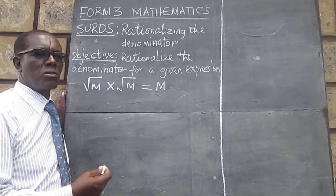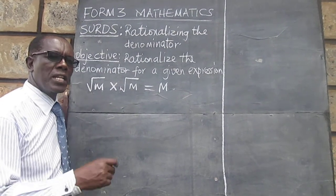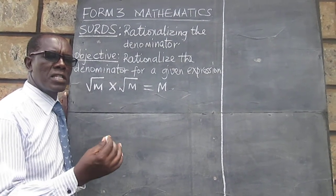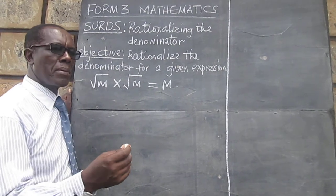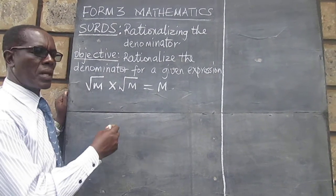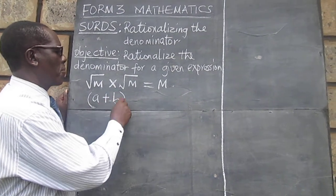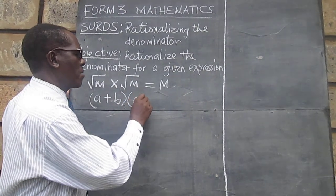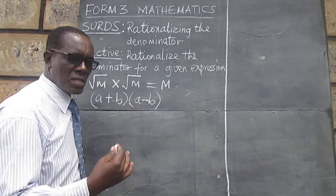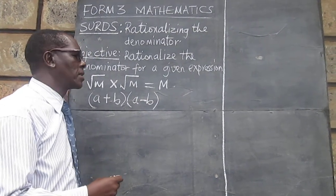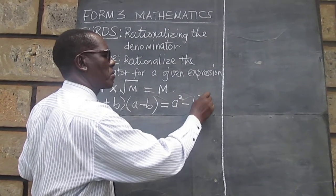So we want to explain what a conjugate is and again in this one we need to remember the concept of difference of two squares. We need to remember that whenever we multiply (a+b) by (a-b), this is something that was learned in the quadratics, we will get a² minus b².